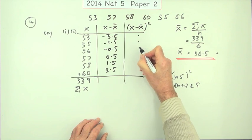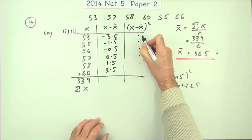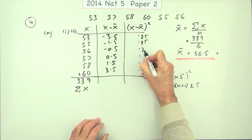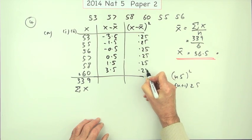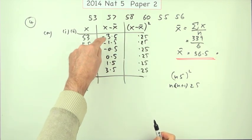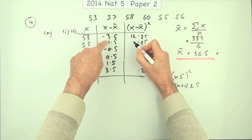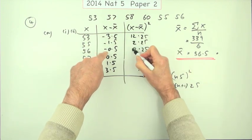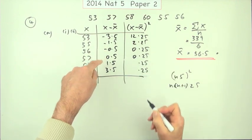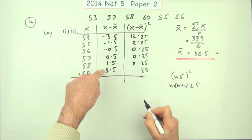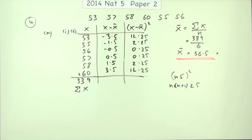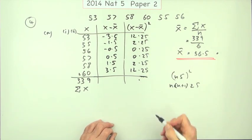So these are all going to end 0.25. And the first two digits will just be made up of that number times the 1 above it. 3 times 4, 12. 1 times 2, 2. Nothing, 0 would be 0. 1 times 2 is 2. 3 times 4 is 12.